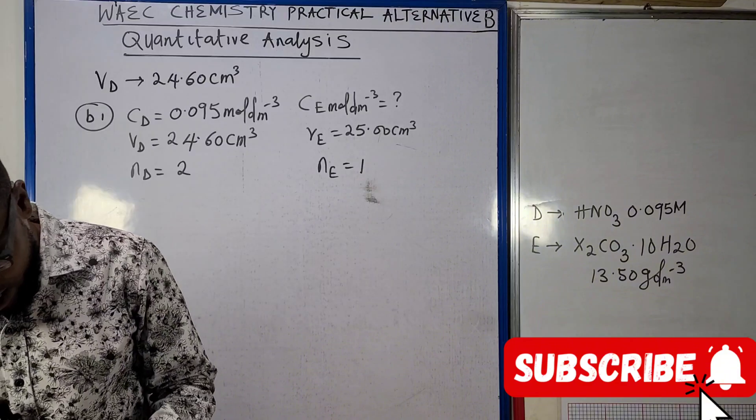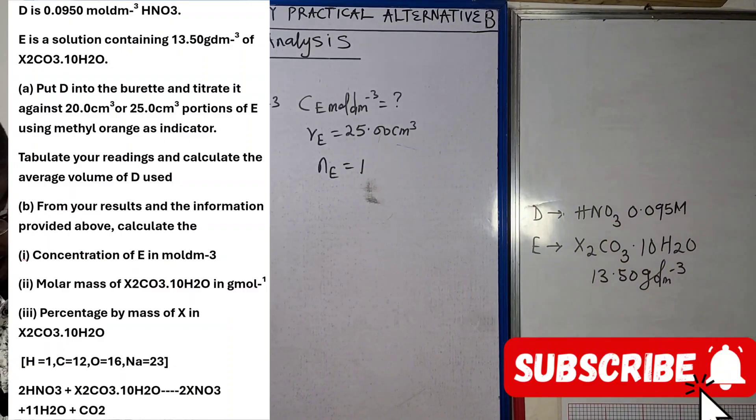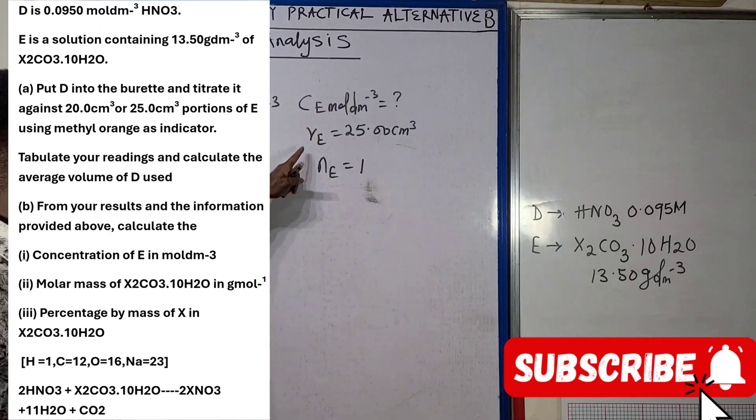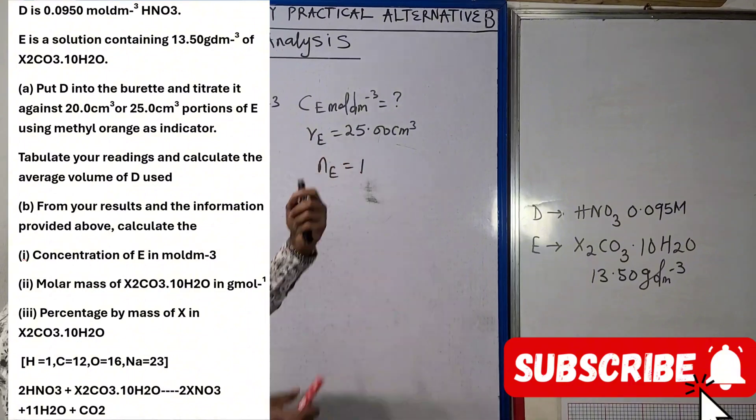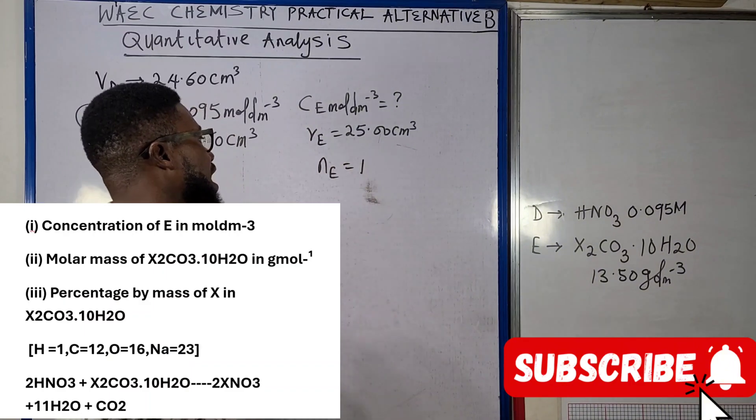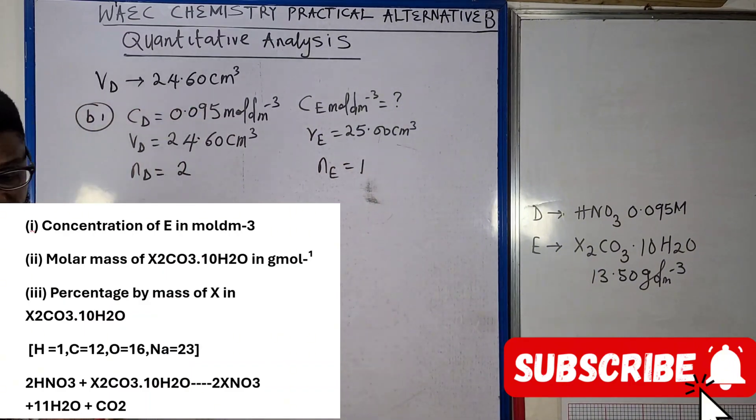From your results and information provided above, calculate the concentration of E in mole per dm³. We are looking for the concentration of E. Our VE, that's volume of E, is actually the volume of the pipette which is 25.